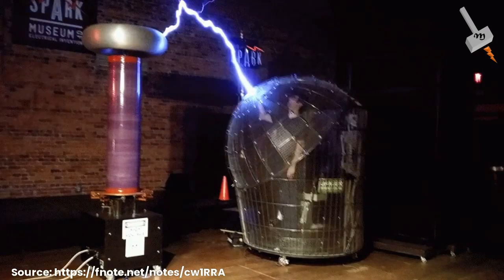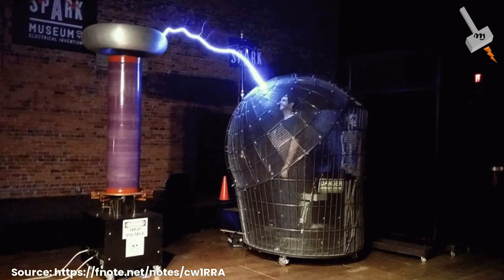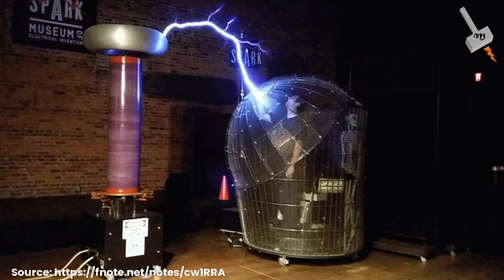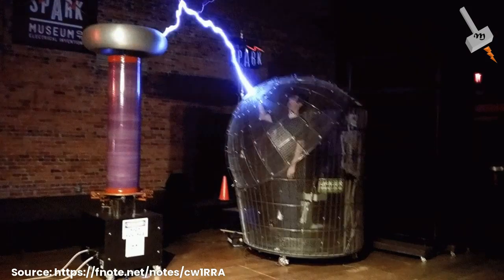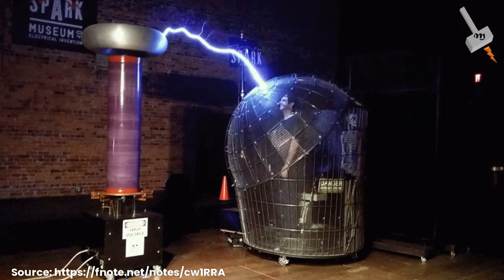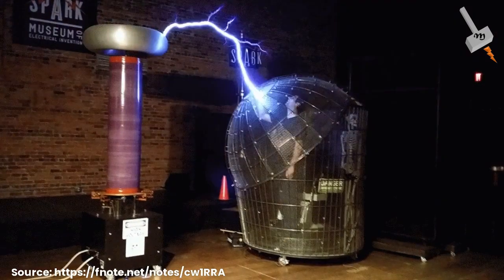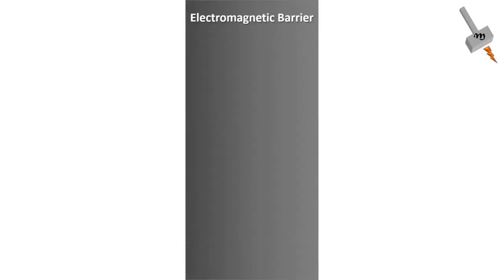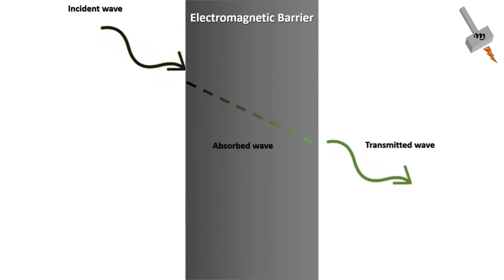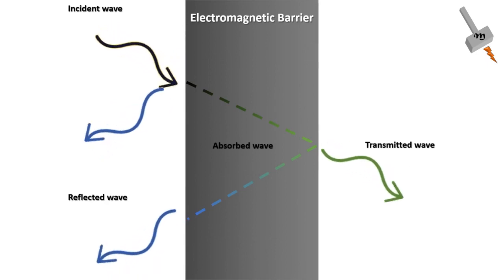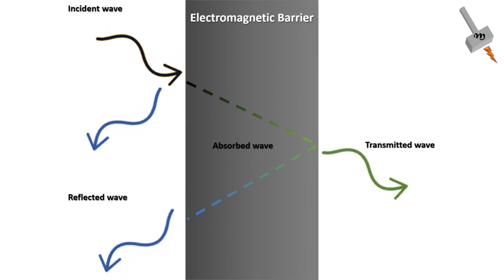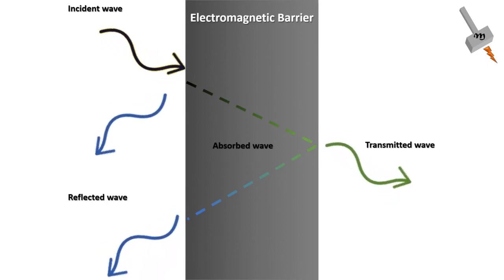Electromagnetic shielding involves the use of conductive or magnetic materials to create a barrier that prevents the penetration of electromagnetic waves. The shielding material acts as a barrier — either it will absorb and transmit, or it will reflect the electromagnetic energy, thereby reducing or eliminating the interference.